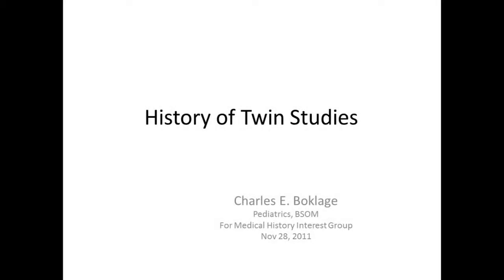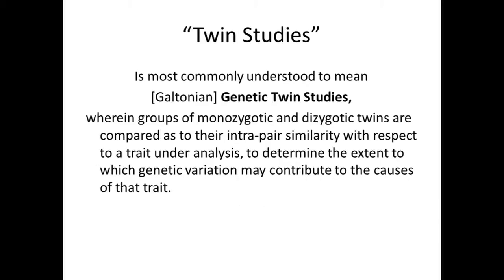The history of twin studies is at least two or three different stories. Generally when we say twin studies we're talking about genetic twin studies. The basic idea is that we have a sample of twin pairs sorted into monozygotic—what some call identical—and dizygotic—what people call fraternal. One kind shares 100% of their genes; the other kind shares the same average amount as any non-twin sibling pair. We try to get a big enough sample to sort them into these two subsamples to determine the extent to which genetic variation may contribute to the causes of a particular trait.